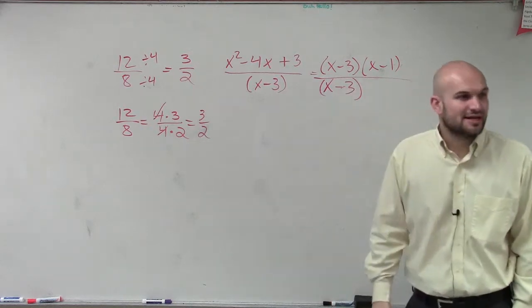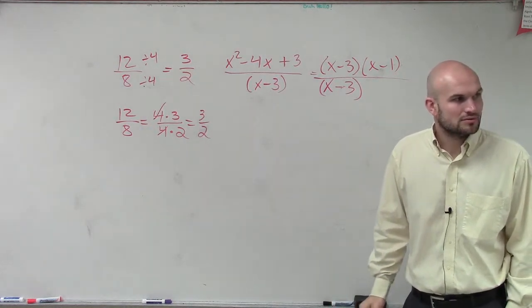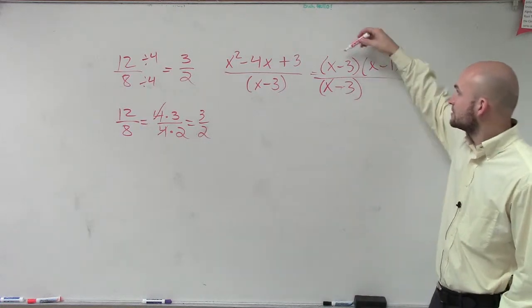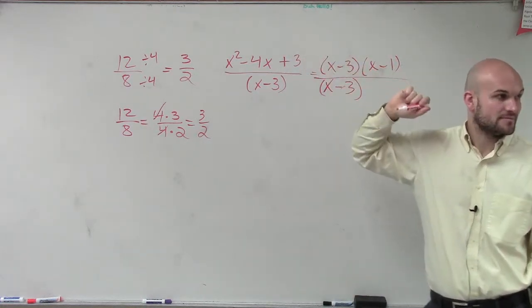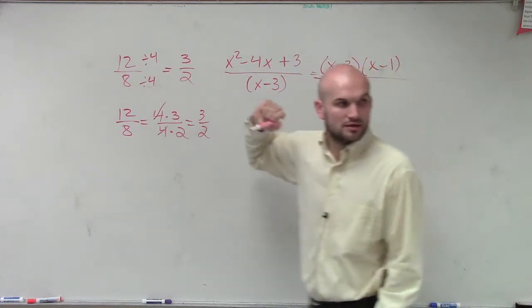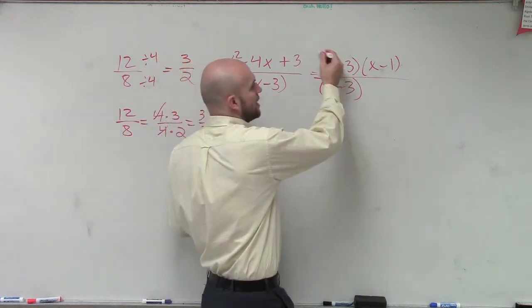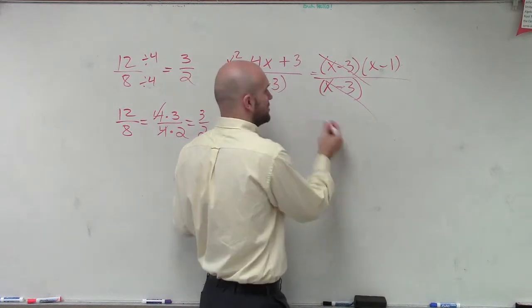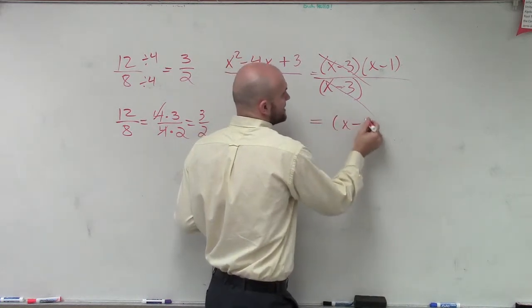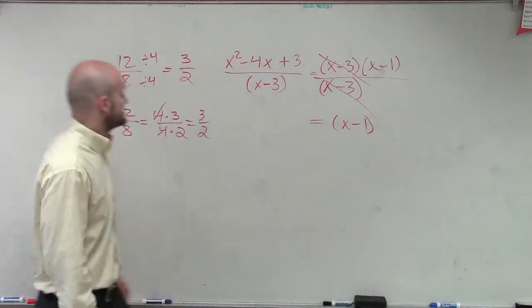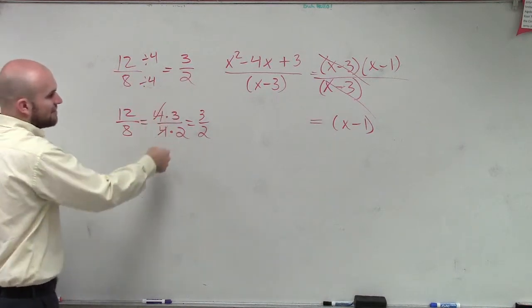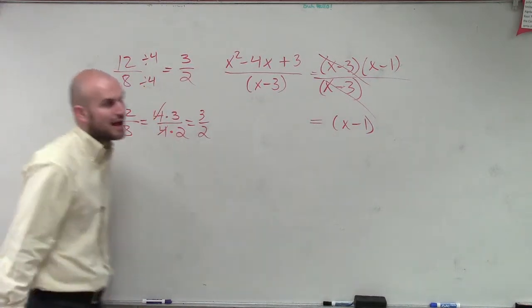Wait. Why do you do X minus 1? Because this times this equals that, when you do FOIL. Oh. Oh, yeah. Okay. So, now, you guys can see that, oh, X minus 3 divided by X minus 3, that just equals 1. So, the final answer is X minus 1. The exact same way that 4 divided by 4 equals 1 just equals your 3 halves.